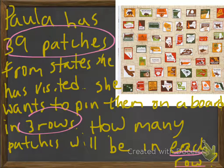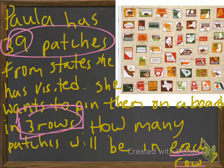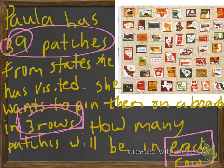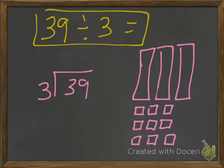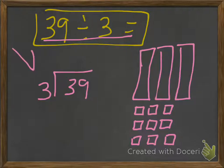So again we've got 39 patches and Paula wants to put them in three rows, so how much will be in each row? Well, our problem is really 39 divided by 3. That's the division problem and we can set it up this way: 39 divided by 3. But we can have these blocks here that might actually help us.